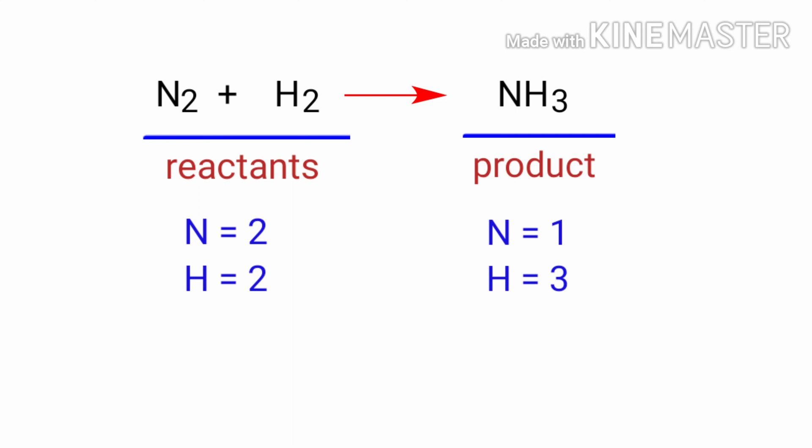In this equation, we need to balance the Nitrogen atoms first. To do this, we need to put a coefficient of 2 in front of NH3.